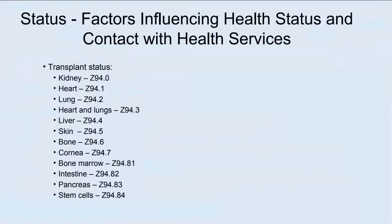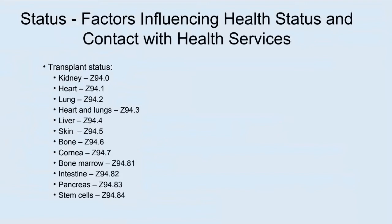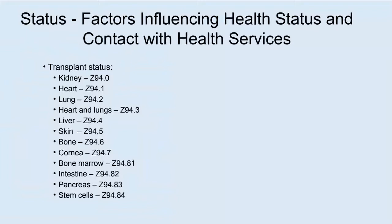There are also Z codes used with transplant codes. First are the transplant status codes: kidney Z94.0, liver Z94.4, corneas Z94.7, intestines Z94.82. These are used when the patient is not being seen for a complication of the transplant, but the fact that they have a transplant will affect treatment — they're probably on immunosuppressive medication. Think of it as: these are status codes — 'oh by the way, the patient has a transplant.' It's not the focus of the visit, but it is important in selecting a treatment plan.